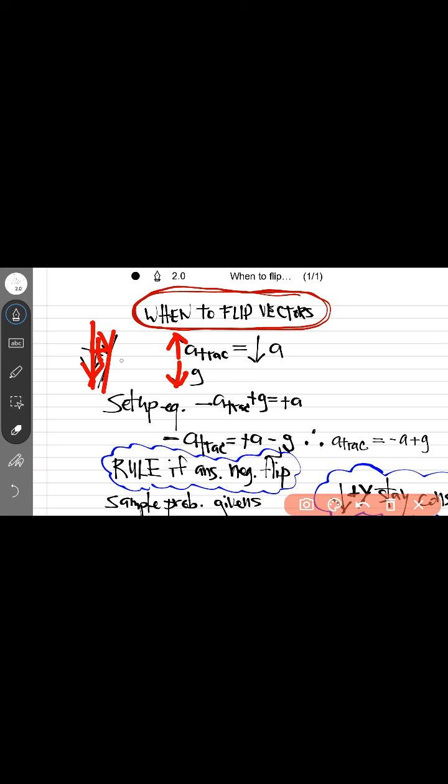With this, we can say minus the acceleration of the tractor beam plus the acceleration of gravity, which is going down, equals—and we know they're going in the downward direction—so the total acceleration down.